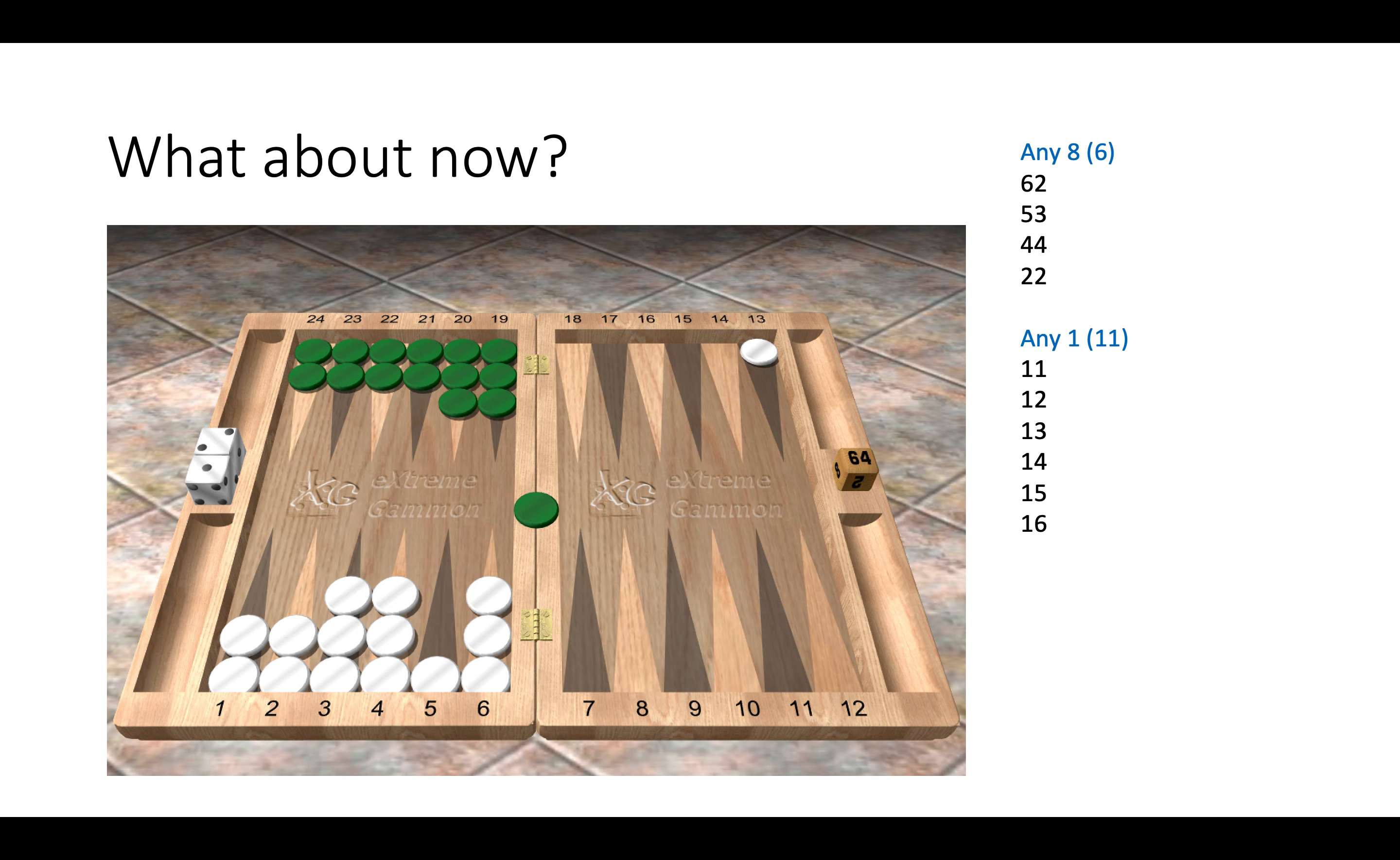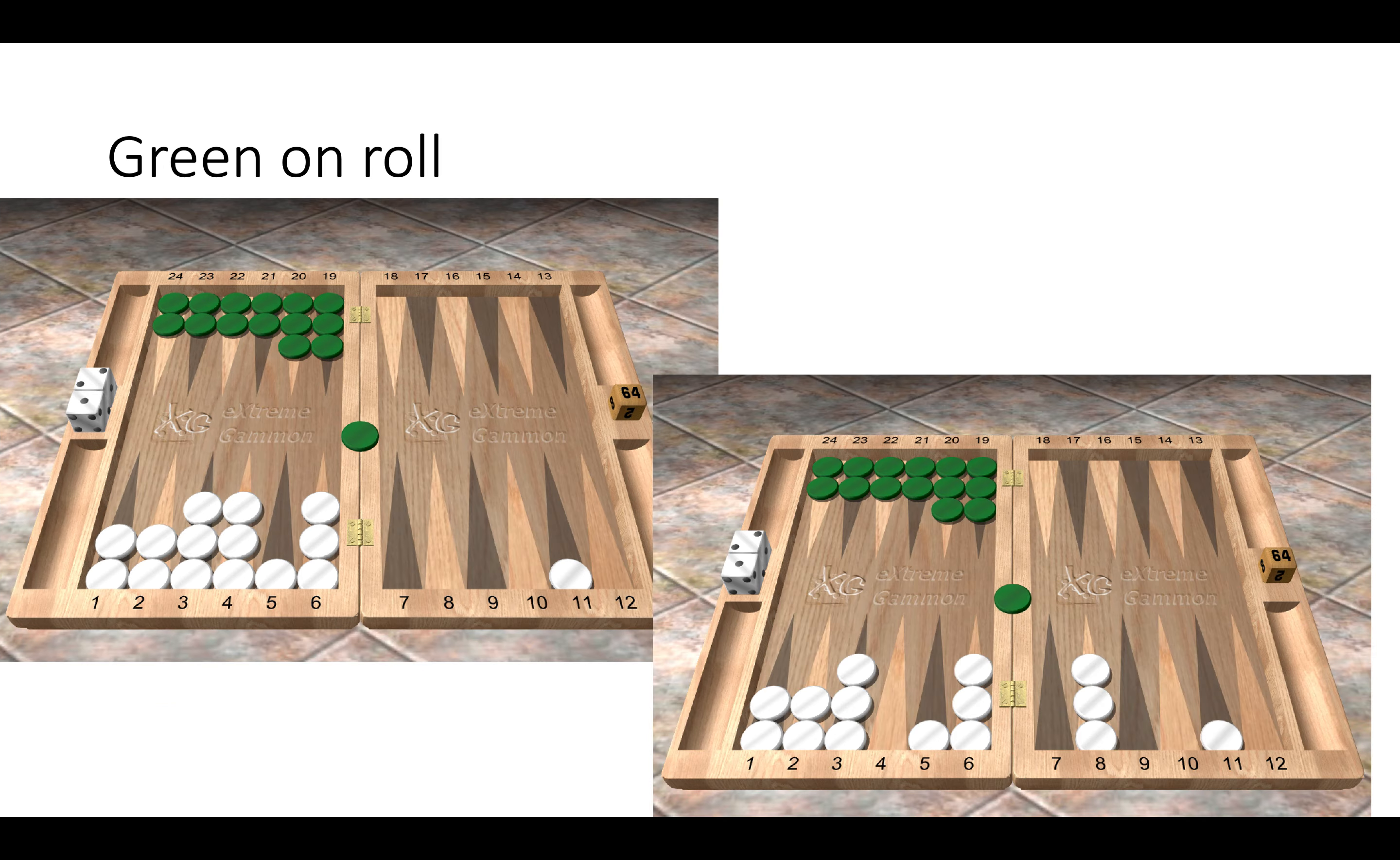Now here green is on the bar and is ready to roll in. Now which position would you prefer to be in as white? The one on the left and the one on the right?